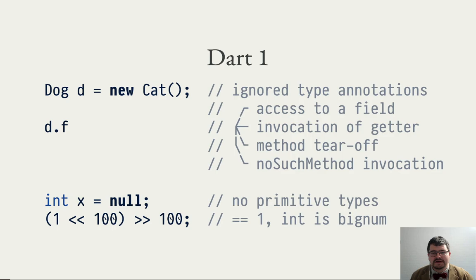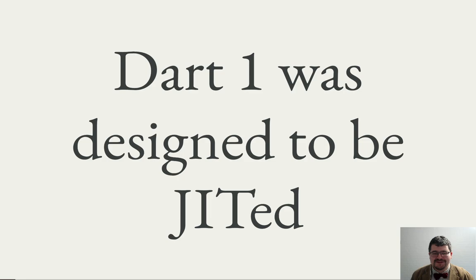Additionally, Dart has no primitive types — all types are reference types, and all reference types are nullable. So if you declare a variable of type int, it can actually contain null inside. And finally, the integer type in Dart 1 was arbitrary width, which added additional challenges. So it should be quite clear that Dart 1 was designed to be just-in-time compiled. Anything short of JIT compilation would not be able to produce efficient code from a language with this level of dynamism.